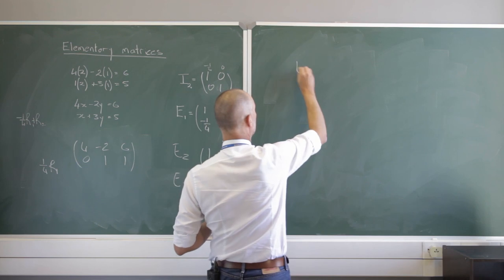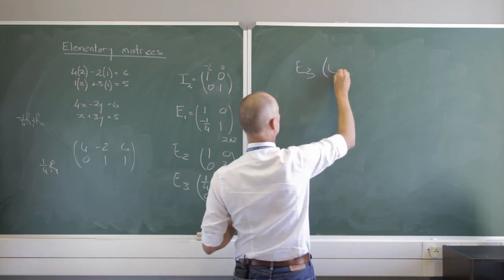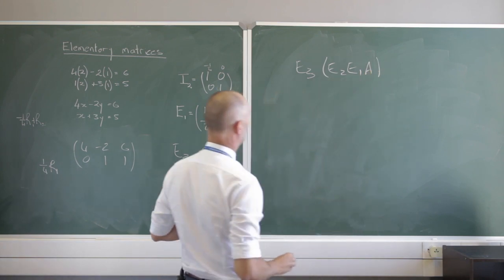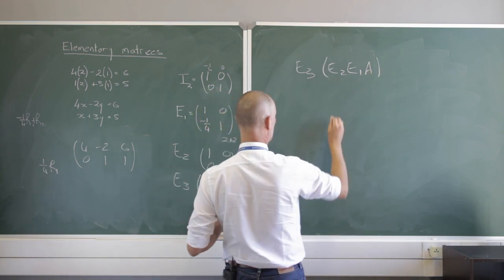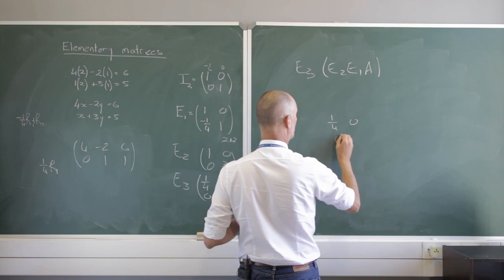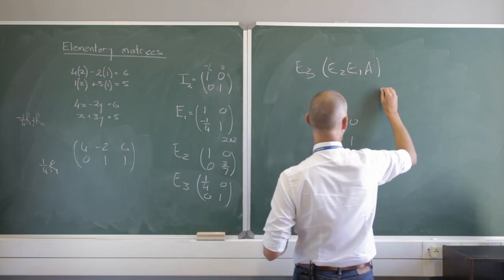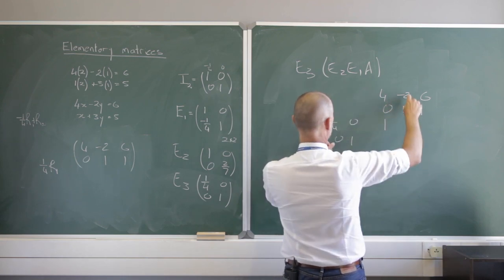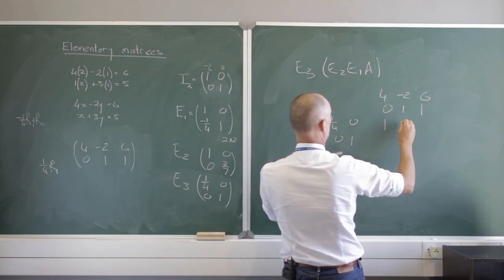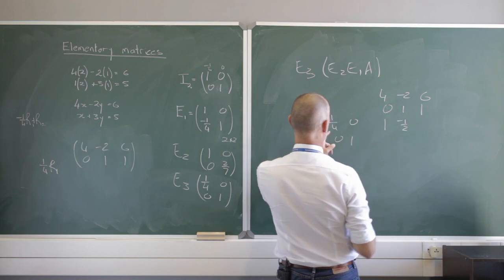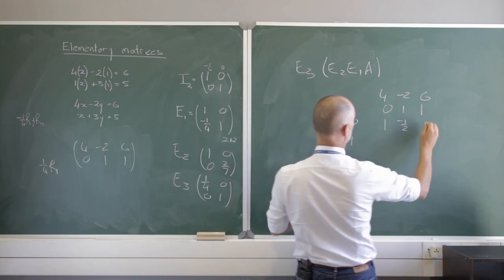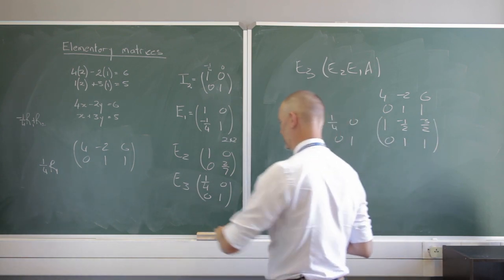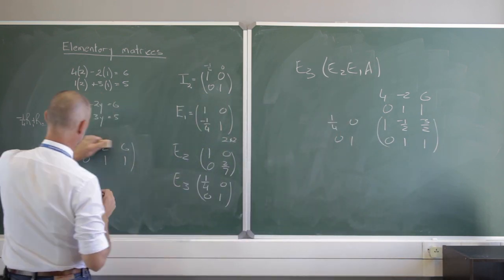Now compute E3 times (E2·E1·A): [1/4, 0; 0, 1] multiplied by [4, -2, 6; 0, 1, 1]. That gives [1, -1/2, 3/2; 0, 1, 1]. So the current state is [1, -1/2, 3/2; 0, 1, 1].